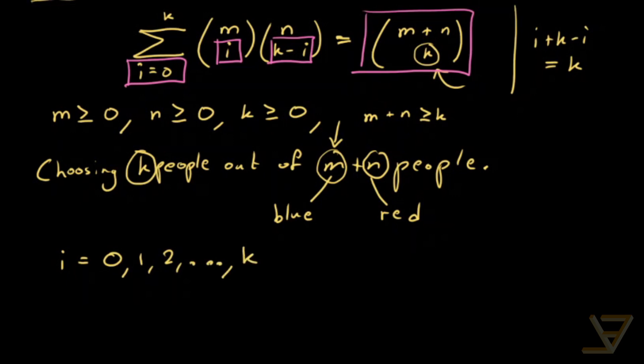And the corresponding numbers of people from the red shirted people are k, k minus 1, k minus 2, all the way through to 0. So we find that this is equal to i equals 0 all the way through to k.